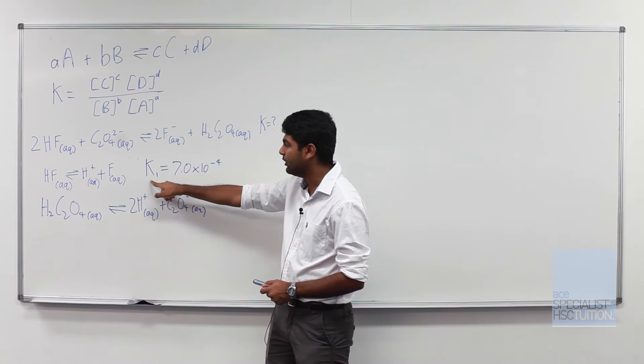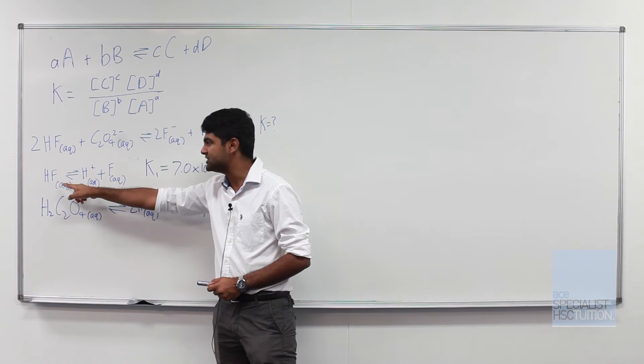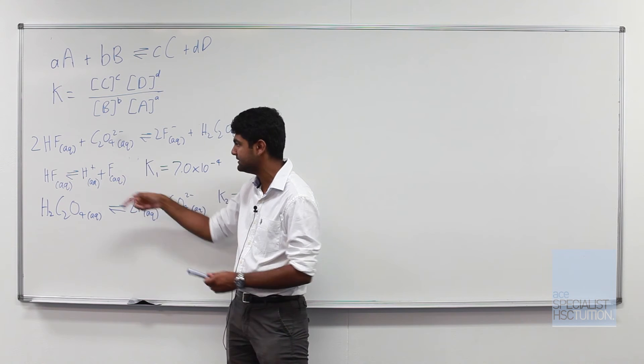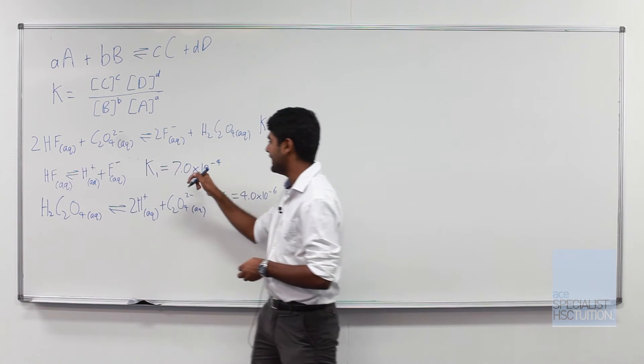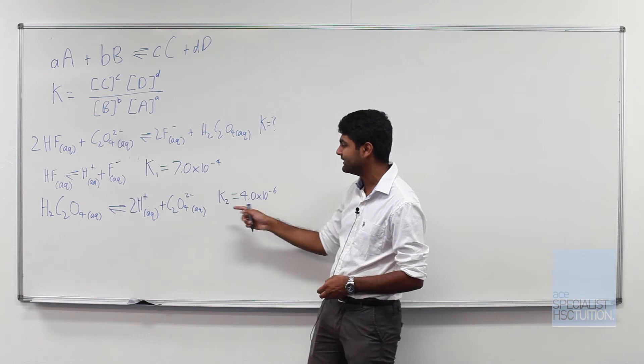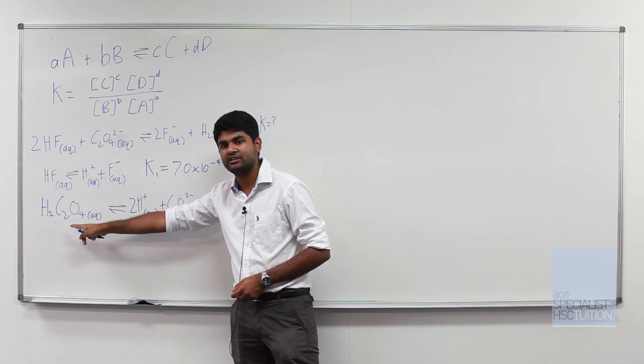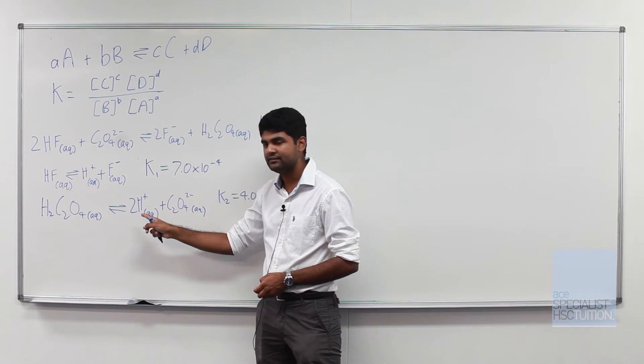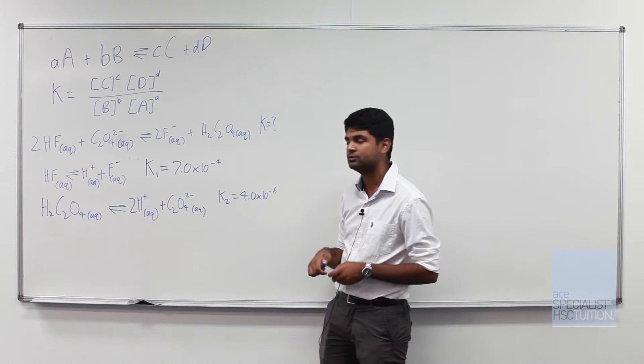We have been given K1 for this reaction HF giving H+ and F- as 7.0 times 10 to the minus 4 and we've been given K2 for this reaction H2C2O4 giving H+ and C2O4^2-.